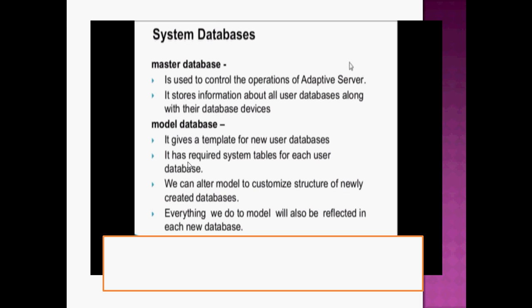The model database gives guidelines to the user for creating a new database — it provides a template for new user databases. It contains the required system tables for each user database. We can alter the model to customize the structure of newly created databases, and any changes made to the model will also be reflected in each new database created.